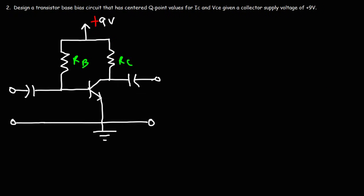Now let's work on a design problem. We want to design a transistor base bias circuit that has centered Q-point values for IC and VCE, given a collector supply voltage of 9 volts. The beta value (HFE) of the transistor is 200. We want to determine the values of RB and RC that will give centered Q-point values.